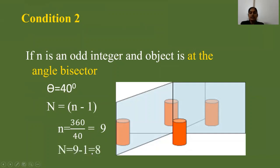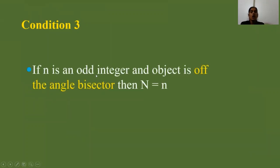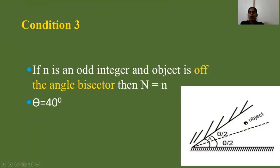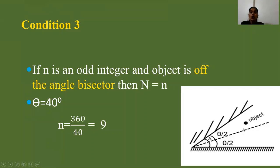Condition three: if n is an odd integer and the object is off the angle bisector — not at symmetry. For theta equals 40 degrees, if the object is placed at 15 degrees between the two mirrors, that is off the angle bisector. Here n equals 360 divided by 40 equals 9, an odd integer, but since the object is off the bisector, the number of images N equals 9.